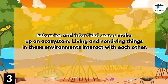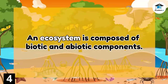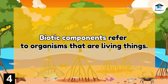Estuaries and intertidal zones make up an ecosystem where living and non-living things interact with each other. They exhibit feeding relationships that enable nutrients and energy to cycle through them. An ecosystem is composed of biotic and abiotic components.